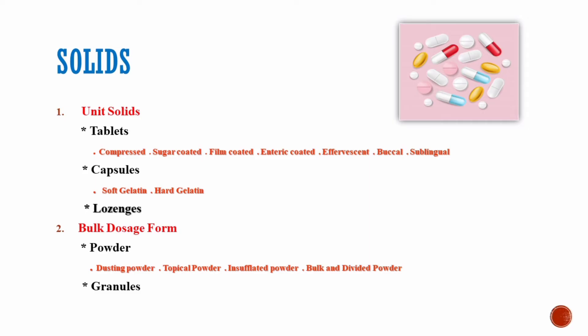Tablets are divided into various types which include compressed, sugar-coated, film-coated, enteric-coated, effervescent, buccal, and sublingual tablets. Capsules are divided into two main types: soft gelatin capsules and hard gelatin capsules.